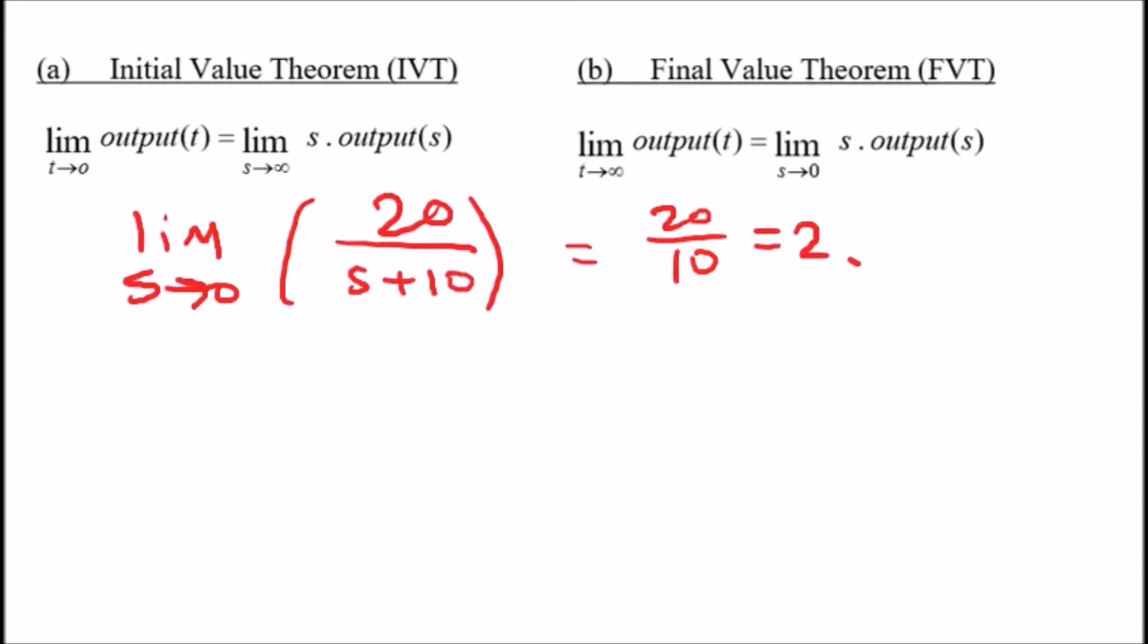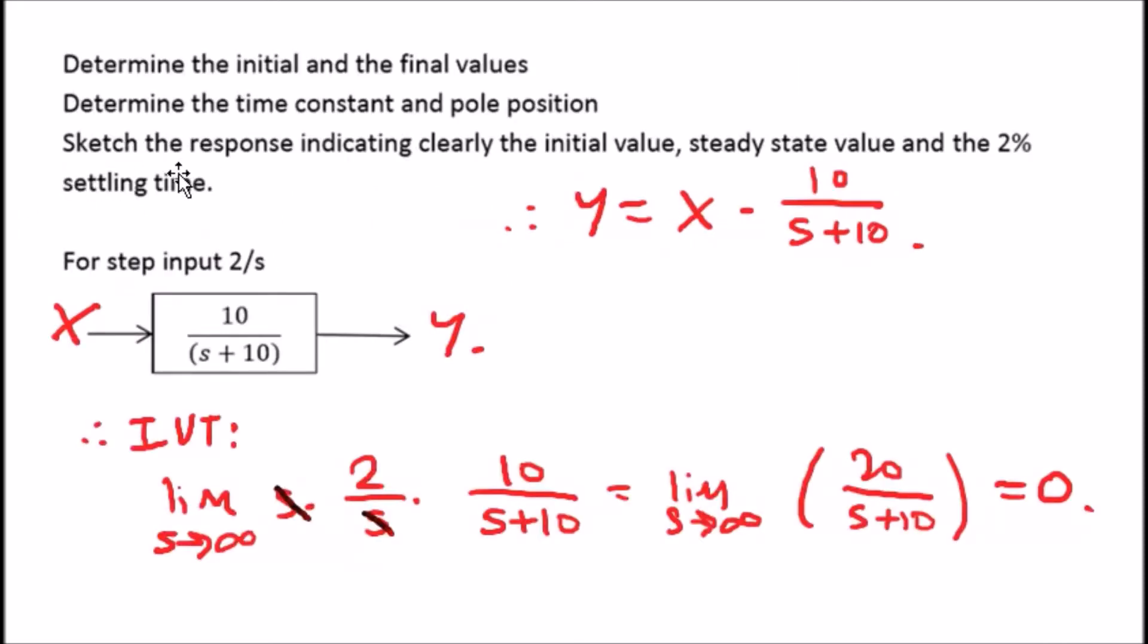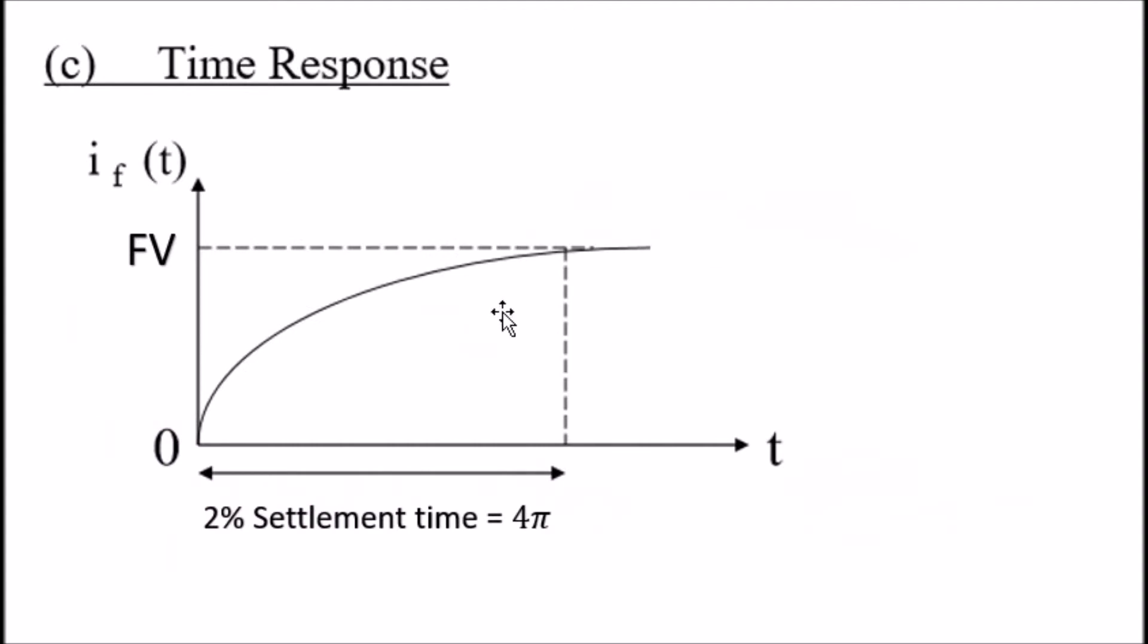Now to really understand what this means, the question tells us we need to sketch the response, indicating clearly the initial value, the steady state value, and the 2% settling time. This is the time response - the 2% settling time equals 4 tau, so we need to calculate tau. The final value equals 2, the initial value is zero, which is correct. This is how the curve is expected to look like - an exponential curve.